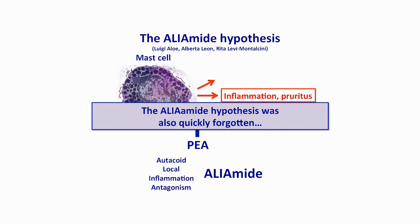Luigi Aloe and Alberto Leon were the two co-workers who came up with this idea. A mast cell has a cell membrane, nucleus, and vesicles full of signaling molecules like serotonin, histamine, and pro-inflammatory molecules. When mast cells get stimulated, usually by antigens, they release these pro-inflammatory molecules, causing inflammation and particularly contributing to itch and pruritus. What Aloe, Leon, and Rita Montalcini did was give PEA to mast cells in culture, and what they discovered is that PEA blocks the release of these inflammatory factors.